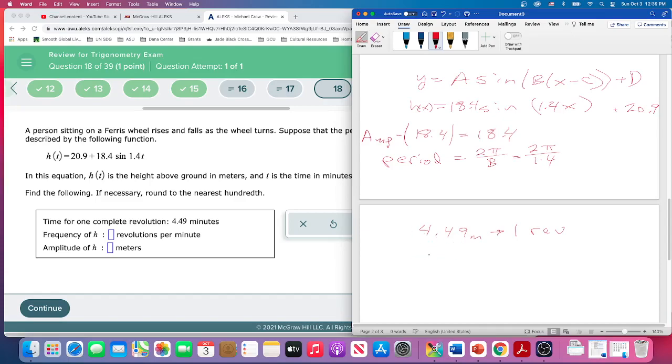So in one minute, we've got to divide. It's only going to do in one minute, it will only do 1 over 4.49 minutes of a revolution. So in one minute, it'll do one of these. So if it took two minutes for a period, then in one minute it would only do one half of a revolution.